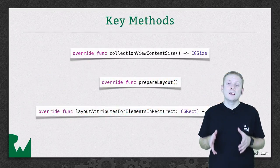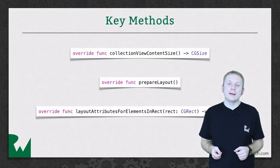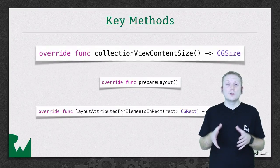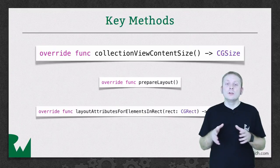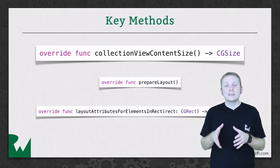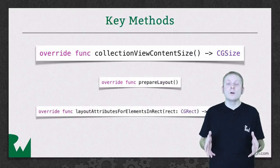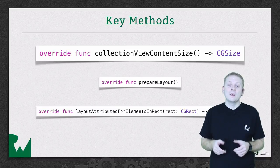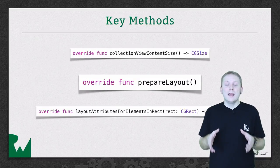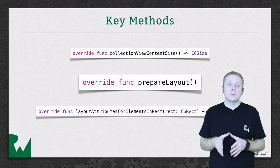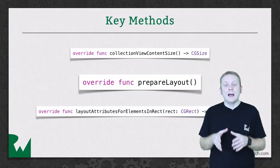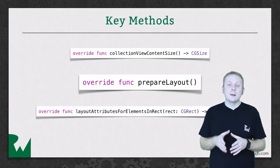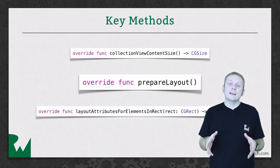There are three methods that any UICollectionViewLayout subclass must override. The first, collectionViewContentSize, returns the height and width of the collection view's content — these values need to represent the entire content, not just the content currently visible on screen. The collection view uses this information to configure its own content size for scrolling purposes. The second method, prepareLayout, is called whenever a layout operation is about to take place, and is the ideal place to perform any computations needed, such as calculating the frames of cells.